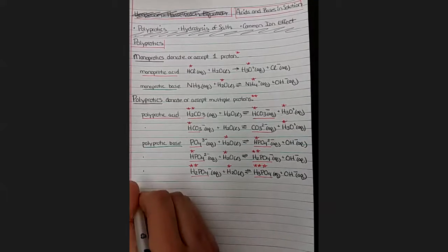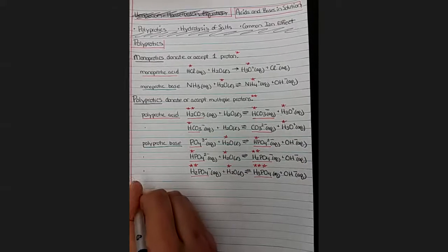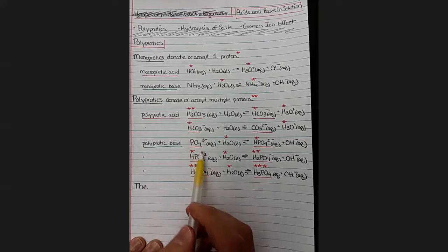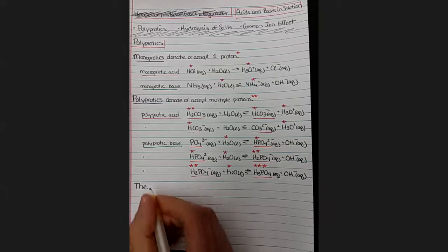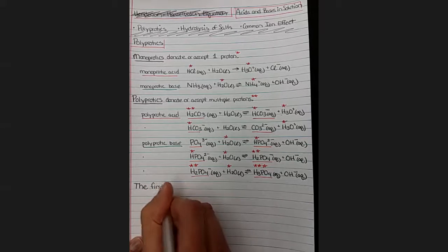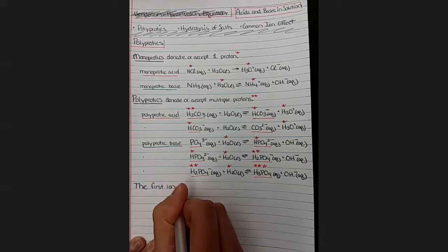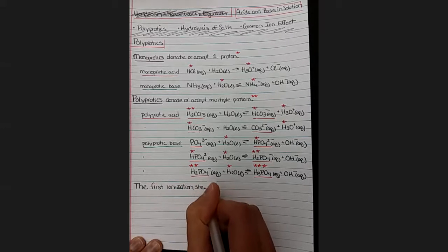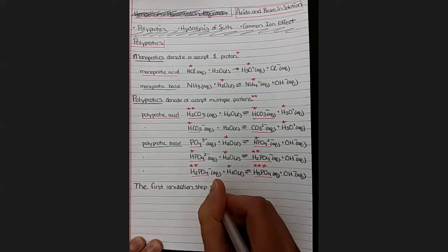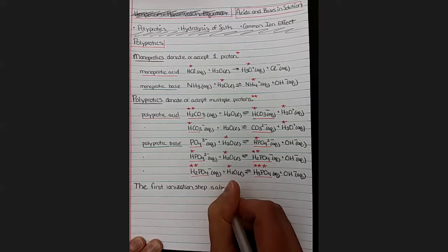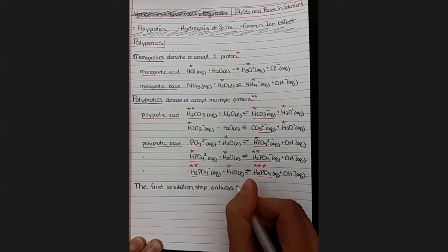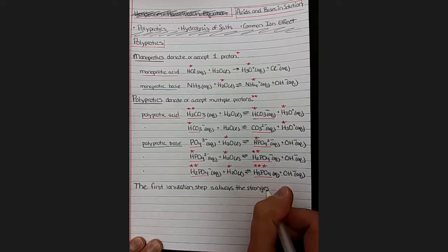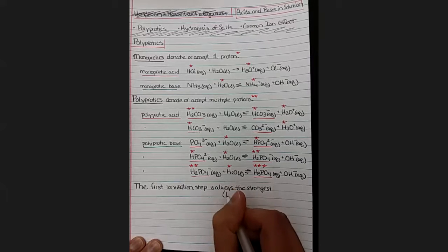So let's just make a quick conclusion about all this stuff that we have just written. So when there's multiple ionizations, we can guess about which one is going to be the strongest. And then we can look it up in a table to confirm. So we know the first ionization step in any process, whether it's an acid or a base, the first one is always the strongest.